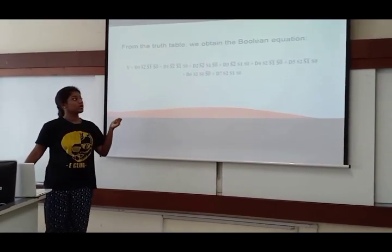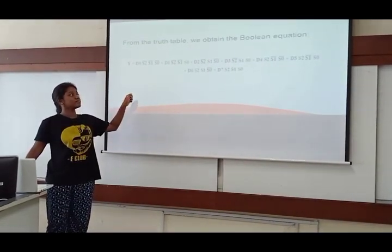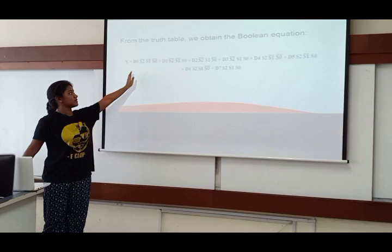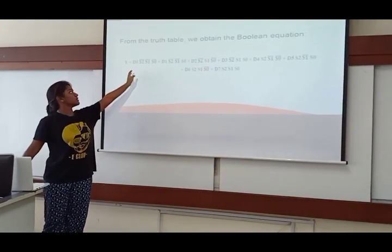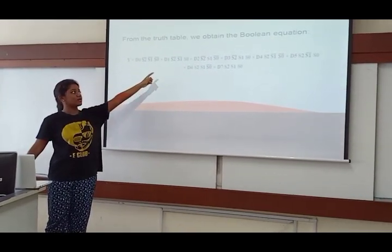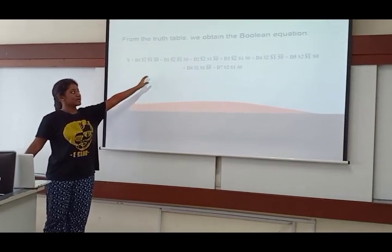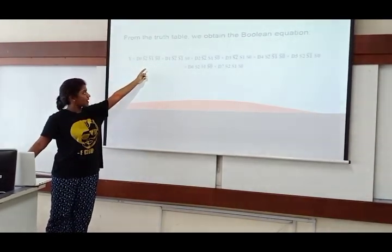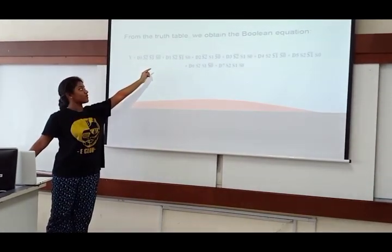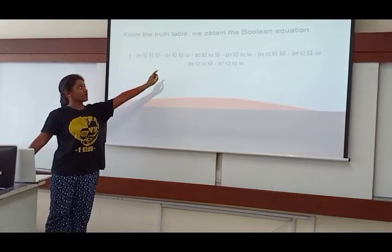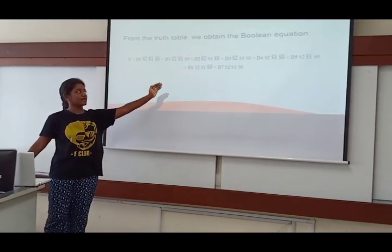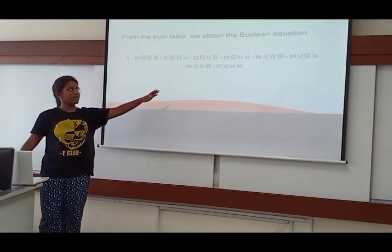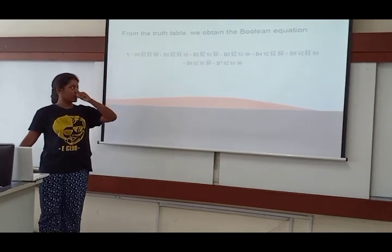Next, after doing the truth table, we got into the Boolean equation, and we got the equation out of the truth table just now. Y is the output, and this is all the selectors and the outputs from the equation. So D0 S2 bar S1 bar S0 bar, or D1 S2 bar S1 bar S0, D2 S2 bar S1 S0 bar, D3 S2 bar S1 S0, or D4 S2 S1 bar S0 bar.